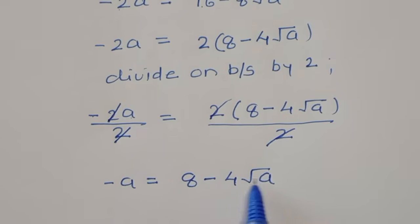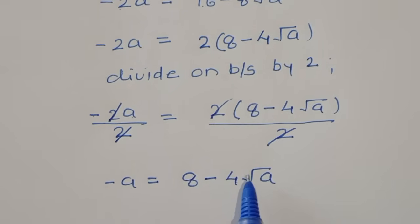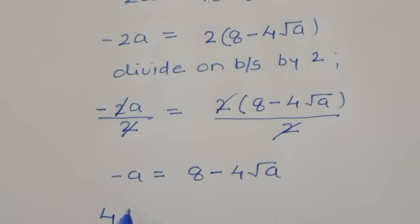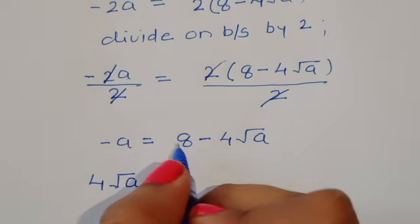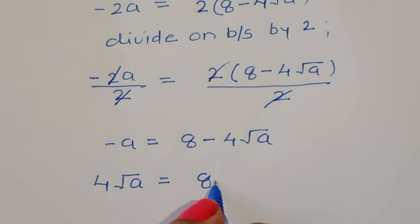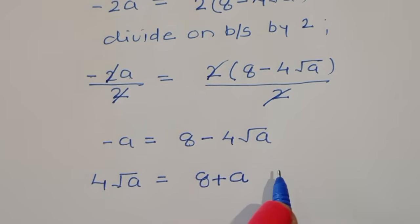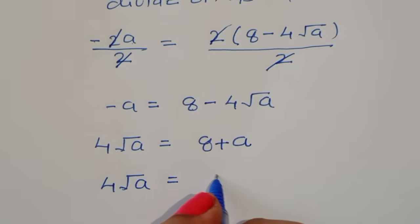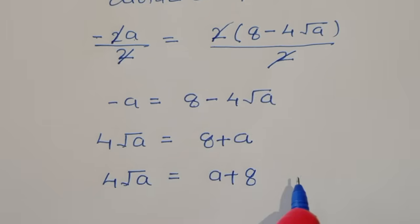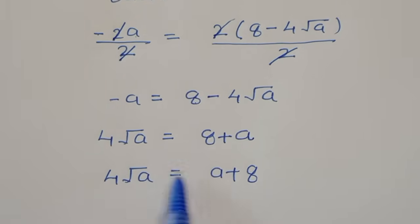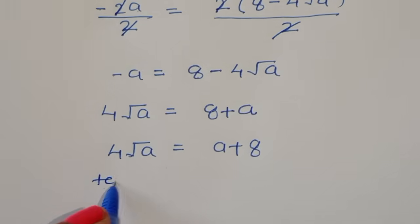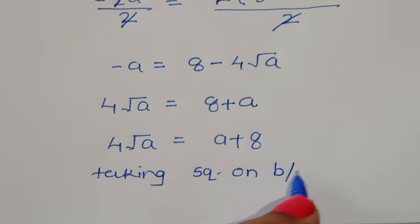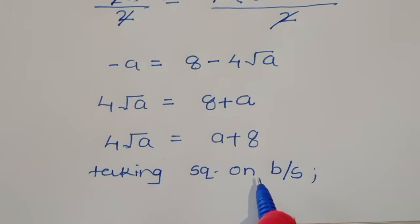Now, minus 4√a when it comes to the LHS becomes positive. So, 4√a is equal to 8 plus a, or we can write 4√a is equal to a plus 8. Now, we can take the square of both sides to simplify this term.